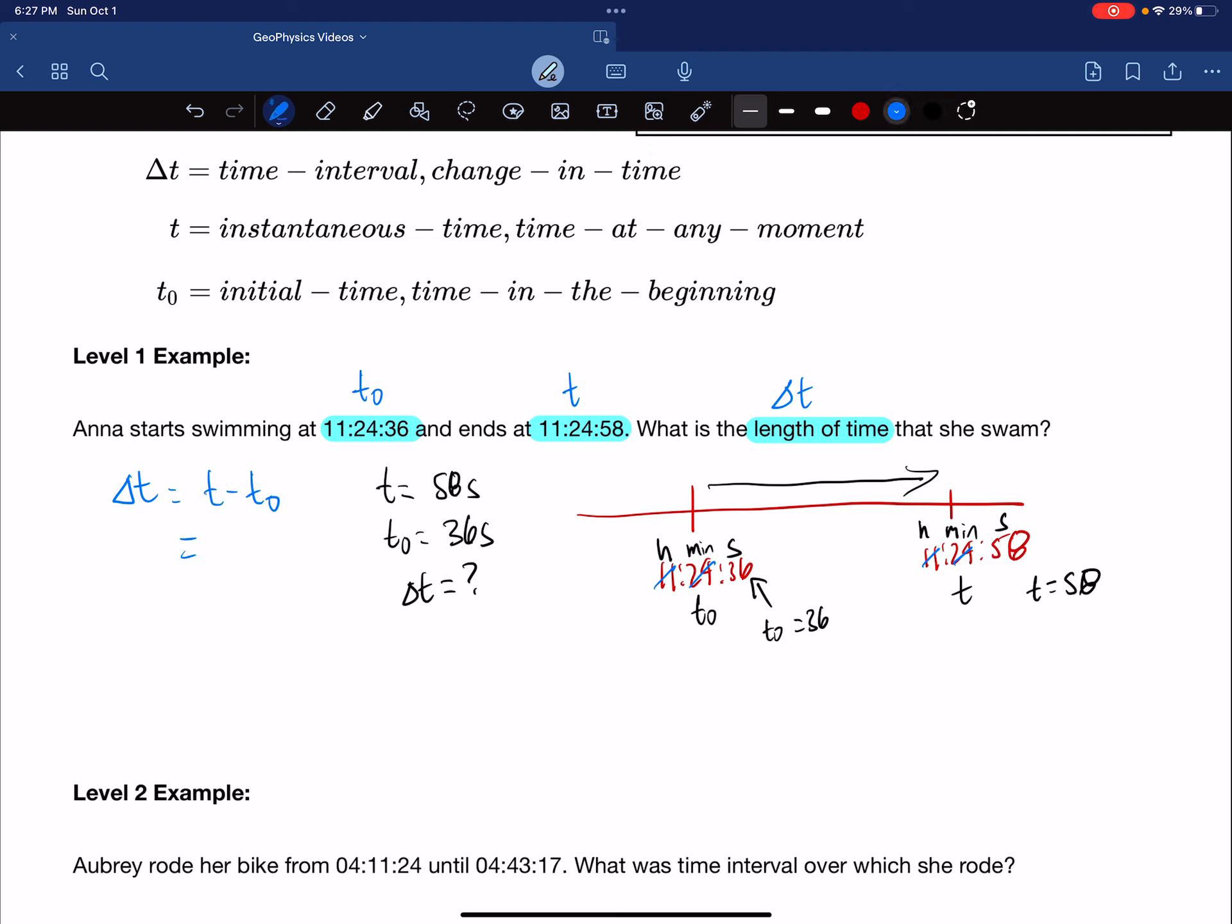So our final time is 58, and our initial time is 36, and that gives us 22 seconds. That is our change in time, or our time interval.